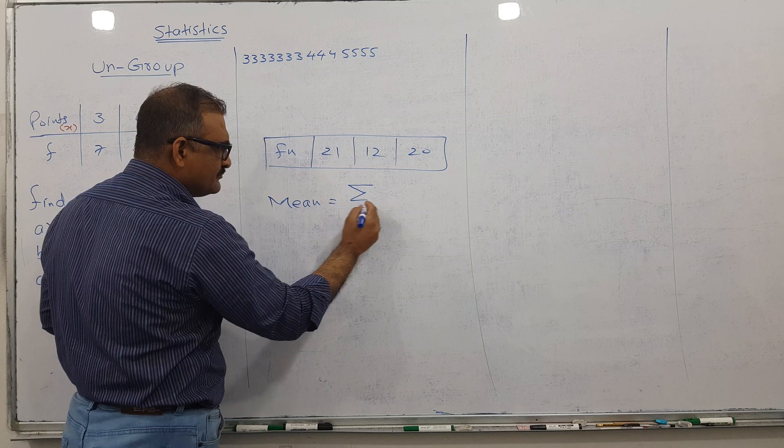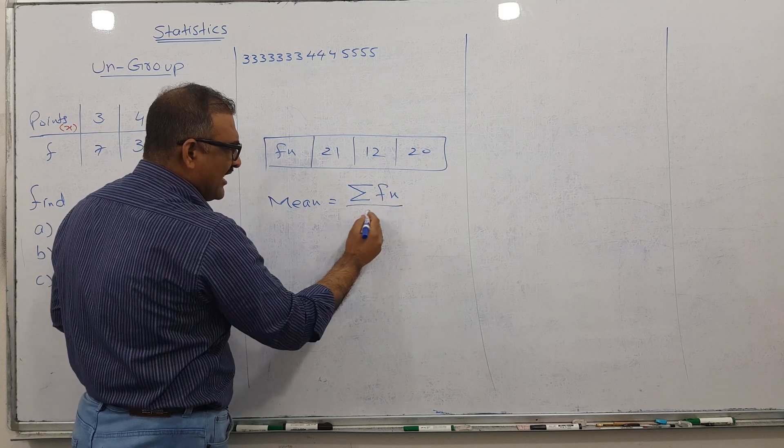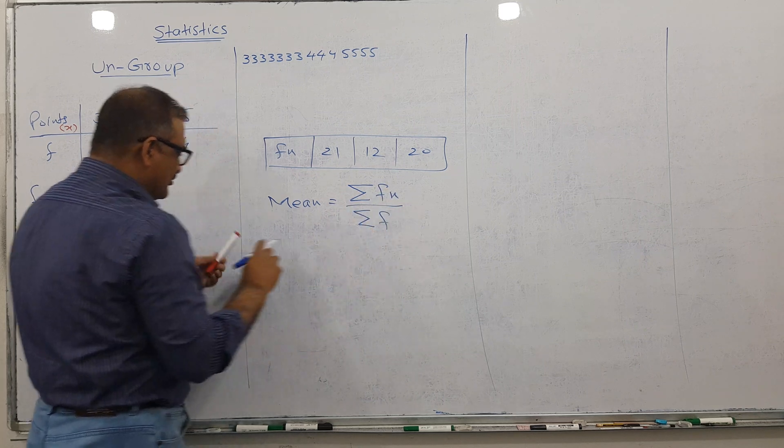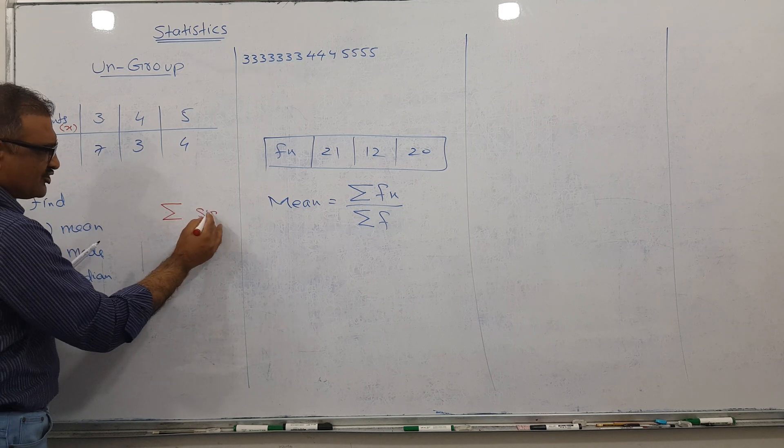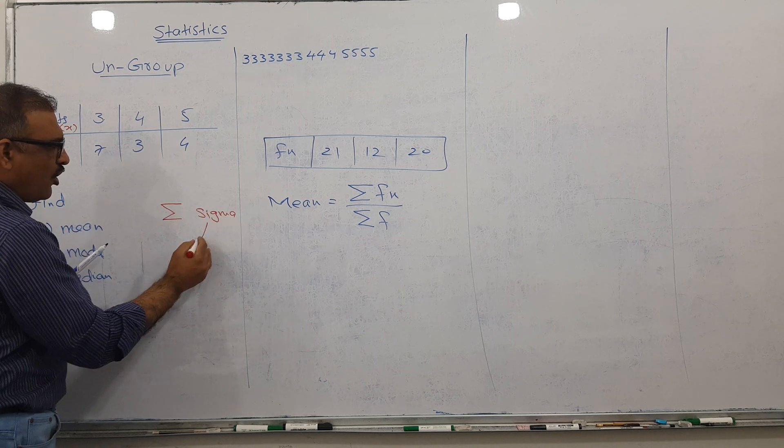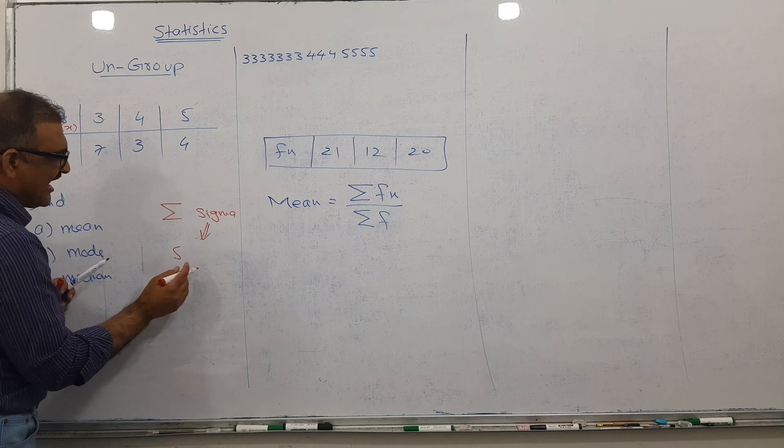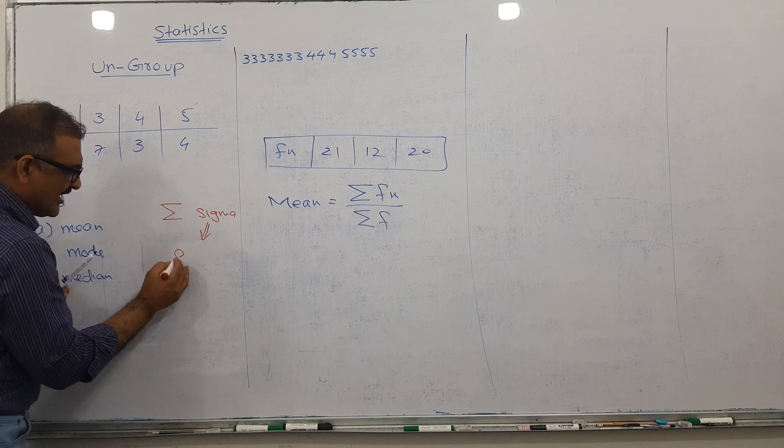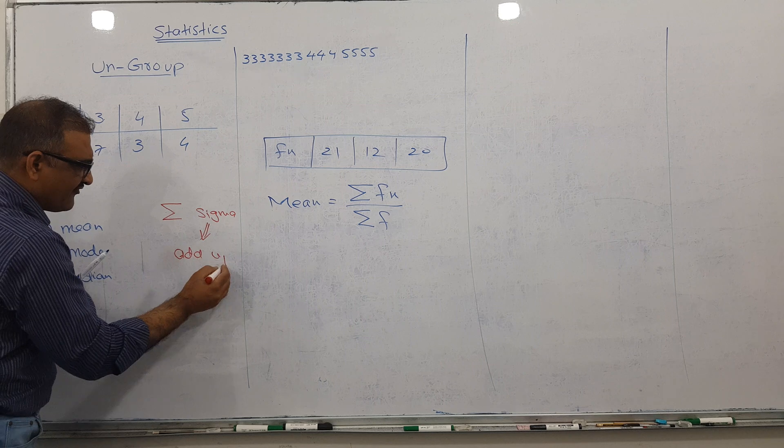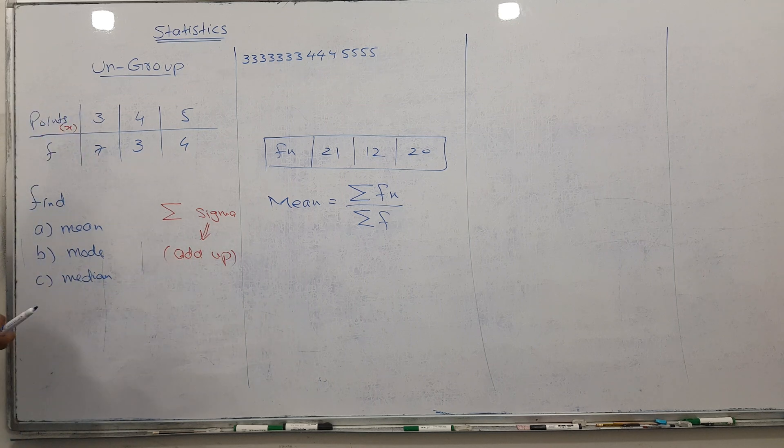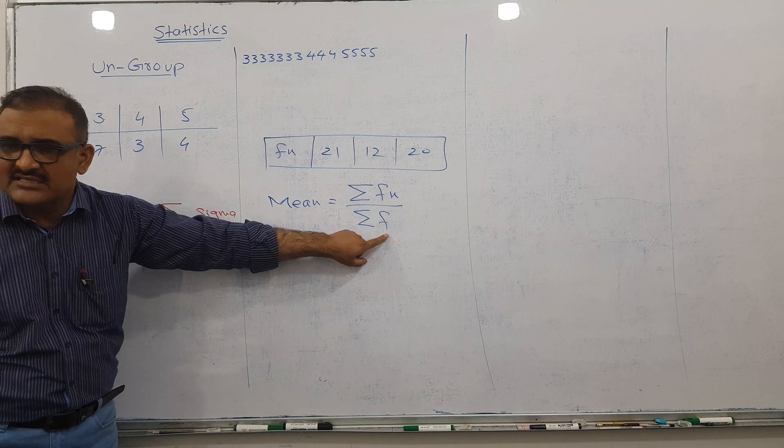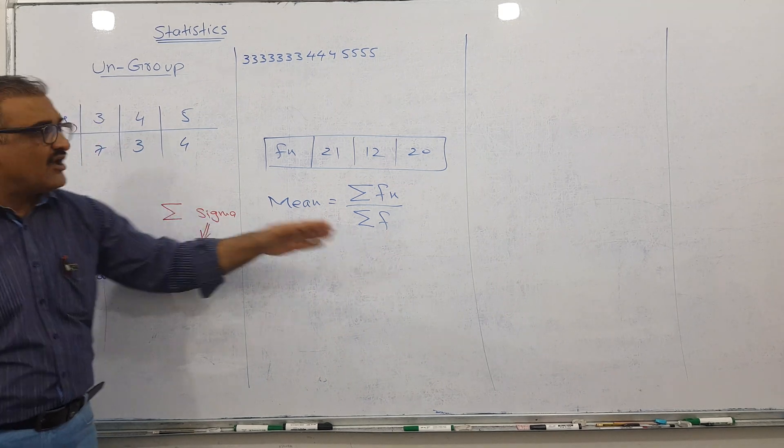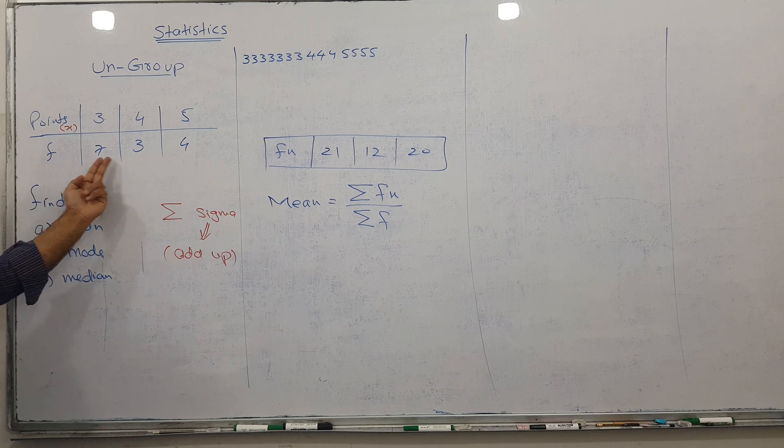Sigma means add up all values of the column. Sigma F means add all values of the F column. We have 7, 3, and 4, so 7 plus 3 plus 4 equals 14.